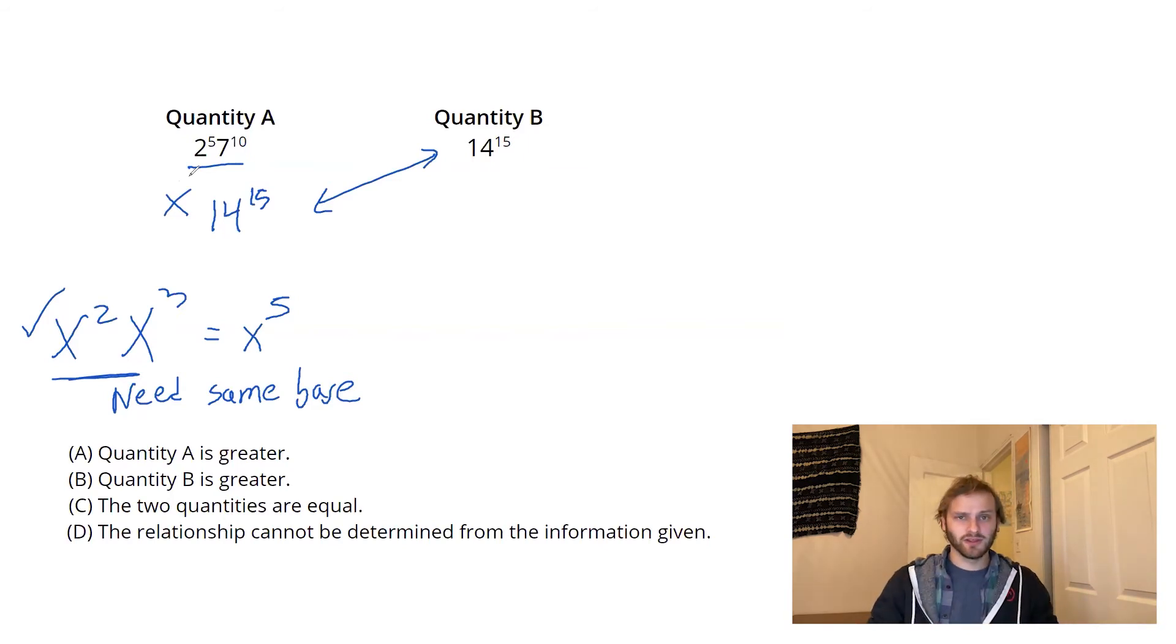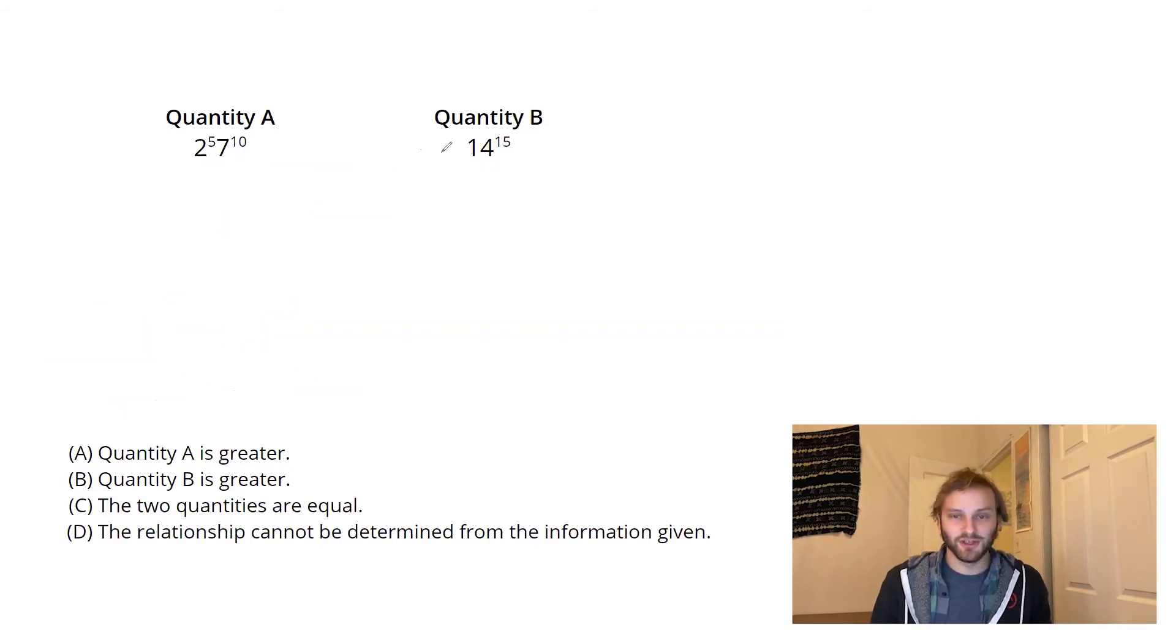So, let's get rid of this and try the way that I would actually do it from the start. Okay, so how do you do this one if you can't smush together that 2 and that 7 to get a 14? Well, you can do the opposite. That 14 over there in quantity B, let's take a look there.